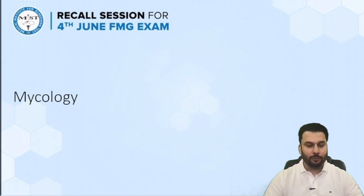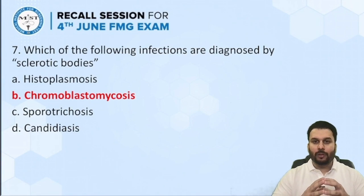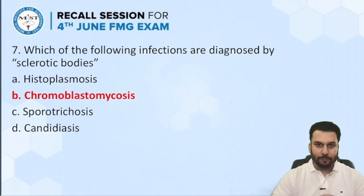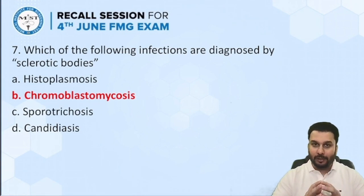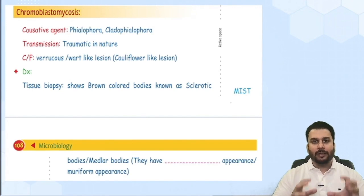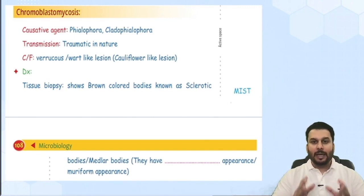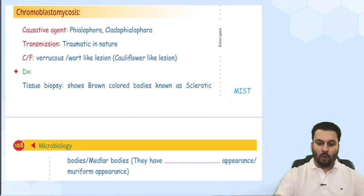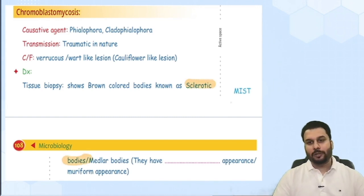The next set of questions would be from mycology. Which of the following infections are diagnosed by sclerotic bodies? The sclerotic bodies are the ones with that copper penny appearance. Chromoblastomycosis would be the correct answer. These are fungi that produce color — that is why the name is chromoblastomycosis. They produce wart-like lesions, and the diagnostic bodies are known as sclerotic bodies or Medlar bodies, which show this copper penny appearance.